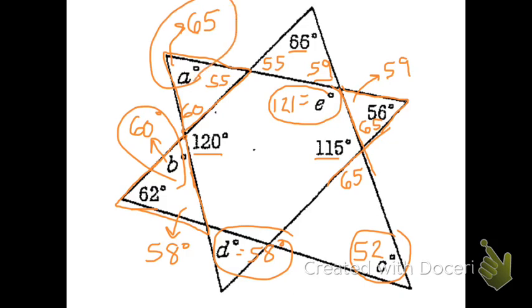That's one example of using the triangle sum conjecture to help you find missing angles.